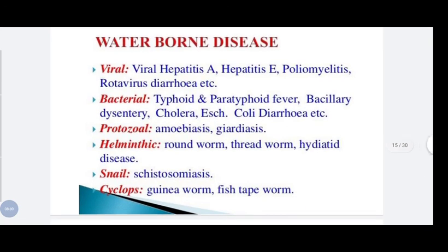What are waterborne diseases? They are categorized by pathogen type. Viral waterborne diseases include viral hepatitis A, hepatitis E, poliomyelitis, and rotavirus diarrhea. Bacterial waterborne diseases include typhoid, paratyphoid fever, bacillary dysentery, cholera, Escherichia coli diarrhea, etc. Protozoan diseases include amoebiasis and giardiasis.